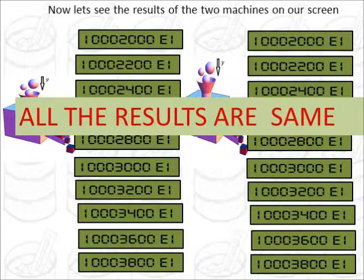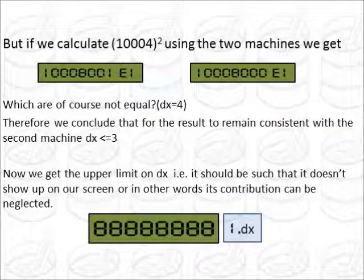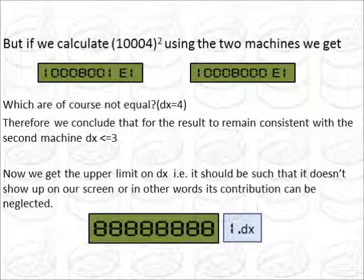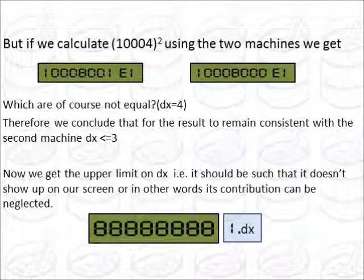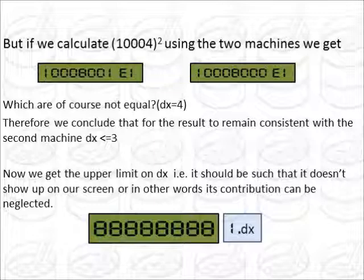So as long as dx squared does not influence the second last digit, our results are going to be correct. So what if we calculate (10004)² using the two machines? Then the results on our screens would be different. As you can see here, there is an extra one digit coming at the one space. Now the reason is very simple. Suppose dx is 3, then 3 squared is 9. Now here the dx is 4, 4 squared is 16. 16 has 2 digits. 3 squared has 1 digit, so it does not appear, whereas in the case of 16, it appears on our screen.